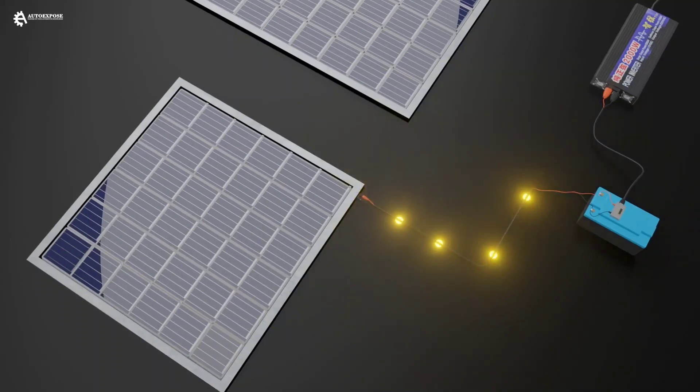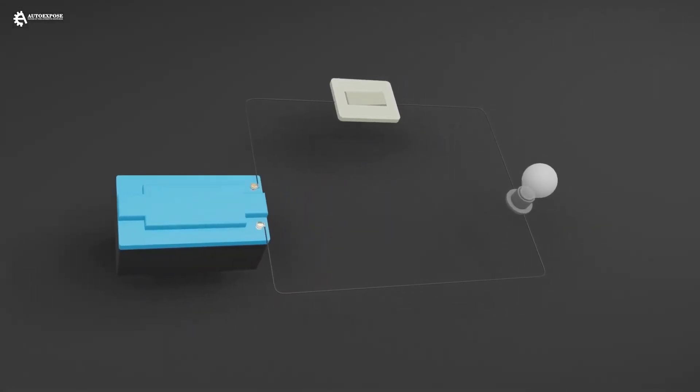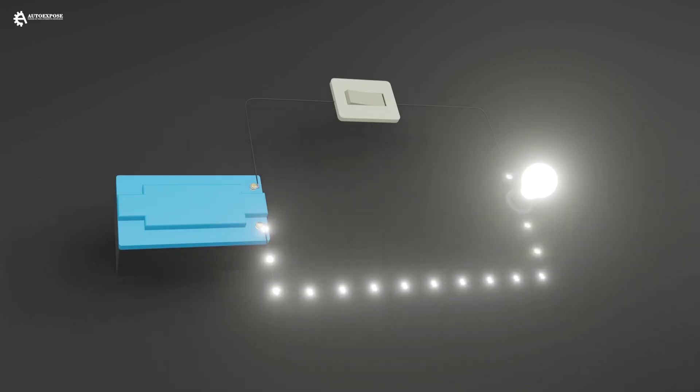Electricity can be created because there are electrons flowing. For example, like this. There is a simple circuit which consists of a battery, a switch, a lamp, and wires. When we turn the switch on, the light will come on. The flame of the lamp is a reaction of the movement of electrons passing through this light bulb.